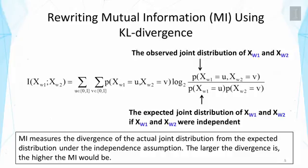This comparison tells us whether the two variables are indeed independent. If they are independent, we would expect the numerator and denominator to be the same. But if they differ, that means the variables are not independent, which helps measure the association. The sum takes into consideration all combinations of values of the two random variables. In our case, each random variable can take one of two values — 0 or 1 — giving four combinations. So mutual information measures the divergence of the actual joint distribution from the expected distribution under the independence assumption. The larger this divergence, the higher the mutual information.